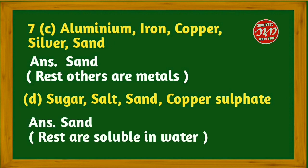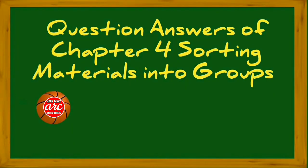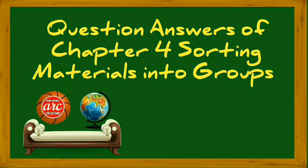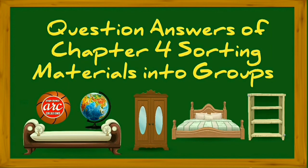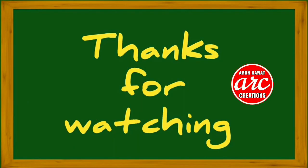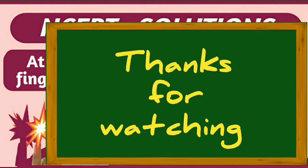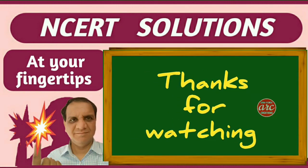C: Aluminium, iron, copper, silver, sand. Answer: sand; rest are metals. D: Sugar, salt, sand, copper sulphate. Answer is sand; rest are soluble in water. So these were the question answers of Chapter 4: Sorting Materials into Groups. Thanks for watching NCERT solutions at your fingertips.